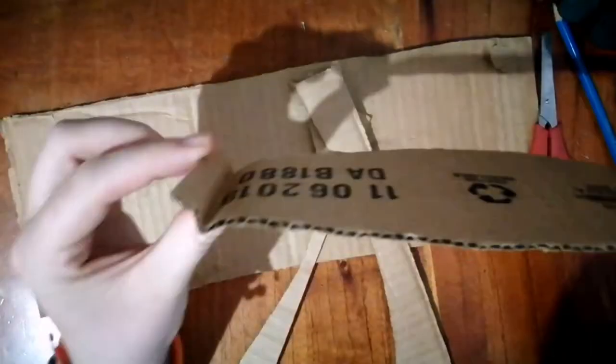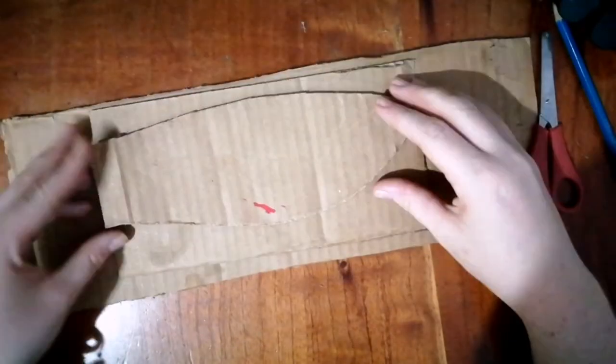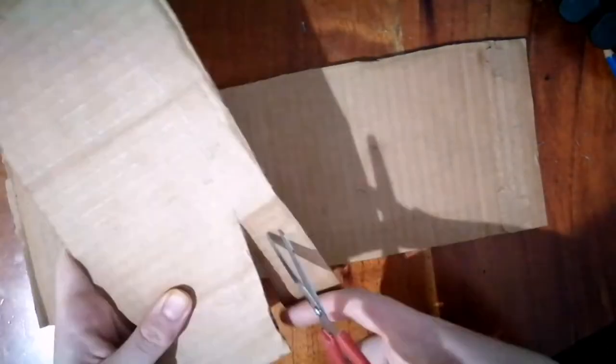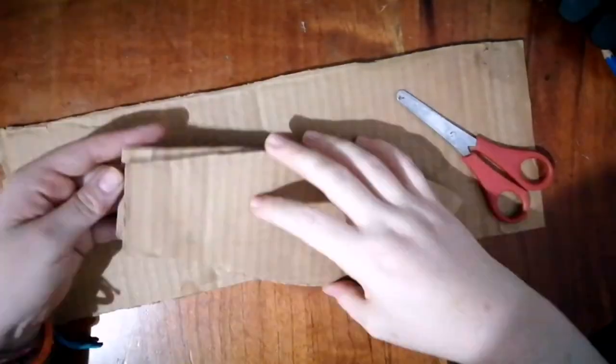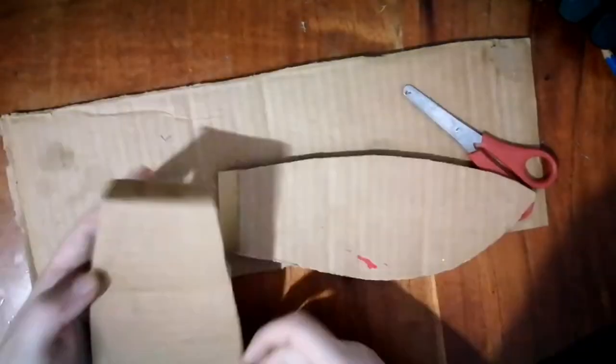Once you've cut that out, you can fold the end over and then draw around that on your second small piece of cardboard to get the basic mirror wing. Cut that one out as well and then do the exact same thing, fold the tab over.